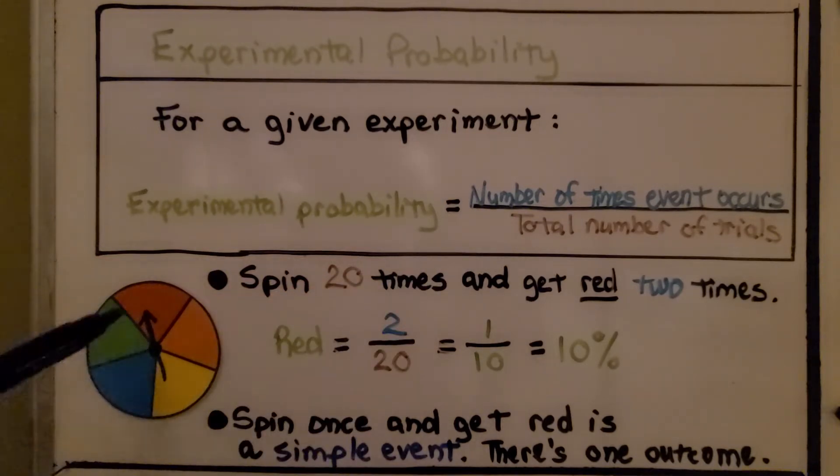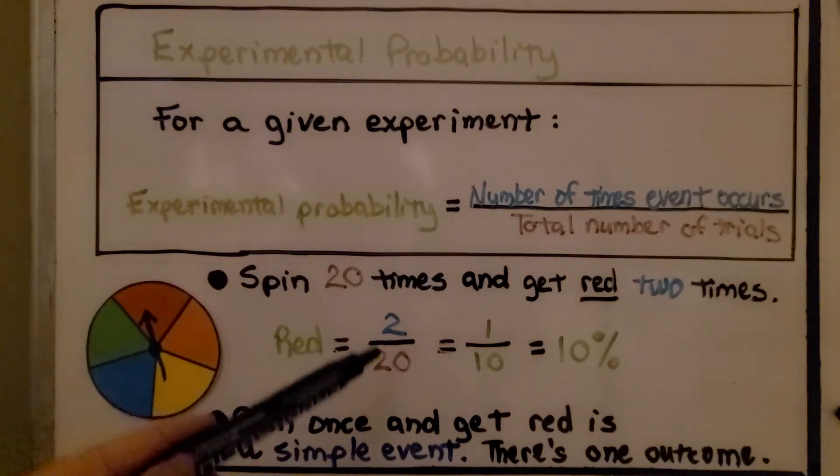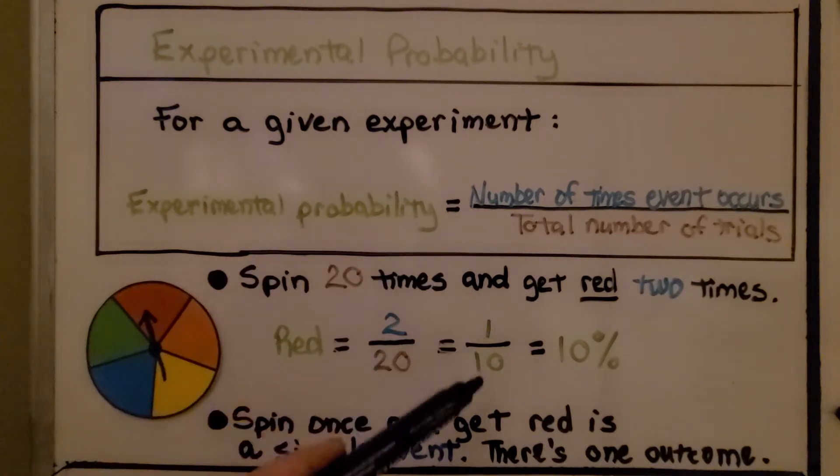We have a spinner with five different colors. If we spin twenty times and get red two times, we have two times out of twenty. That's two-twentieths, which is equal to one-tenth when we simplify, or ten percent.